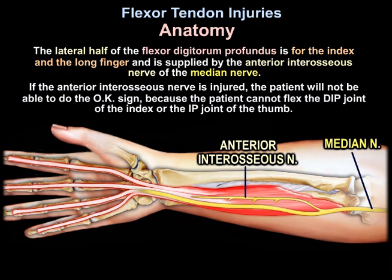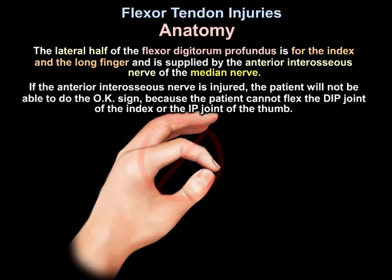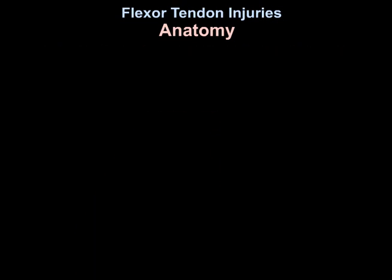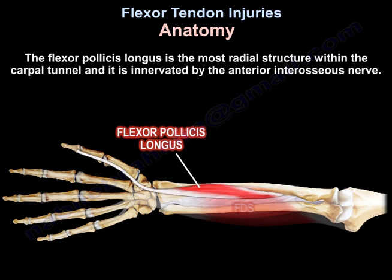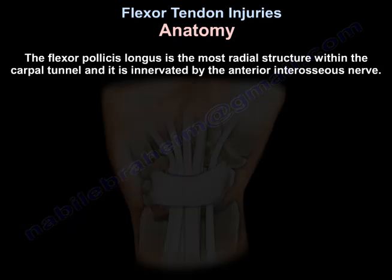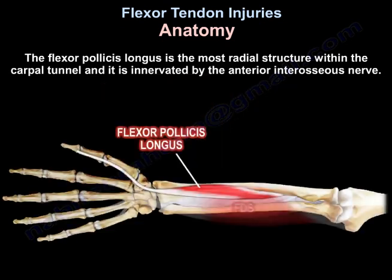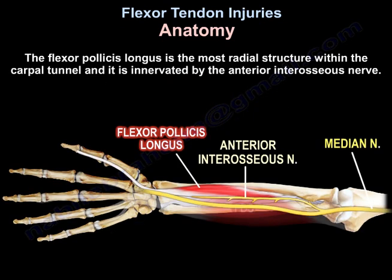The lateral half of the profundus — for the index and long finger — is supplied by the anterior interosseous nerve of the median nerve. If the anterior interosseous nerve is injured, the patient cannot make the 'okay' sign because they cannot flex the DIP of the index finger or the IP of the thumb. The flexor pollicis longus is the most radial structure in the carpal tunnel and is also innervated by the anterior interosseous nerve.